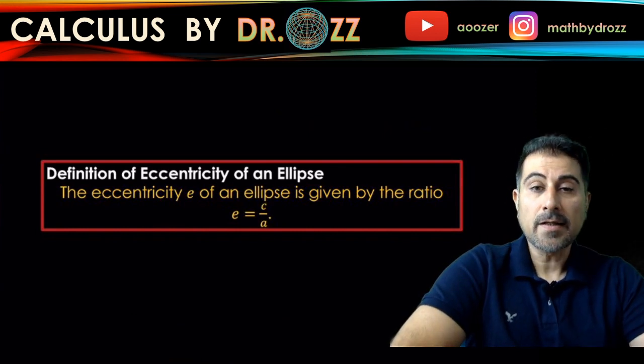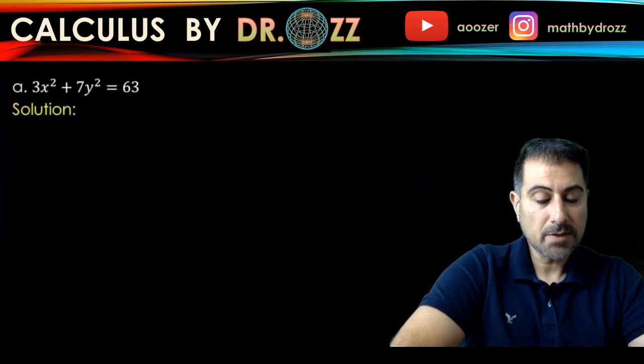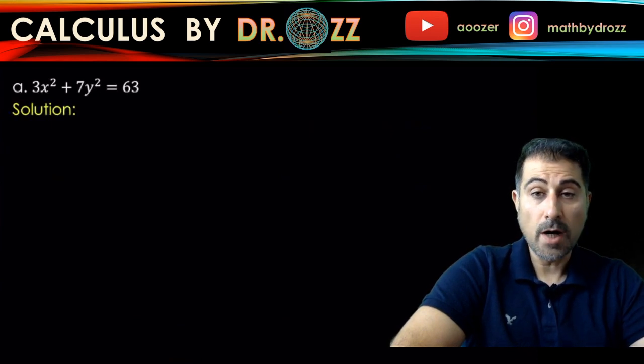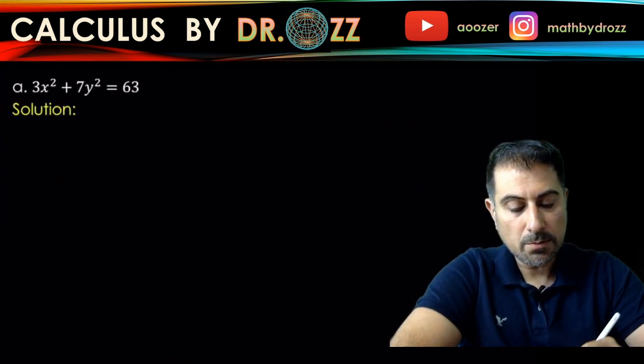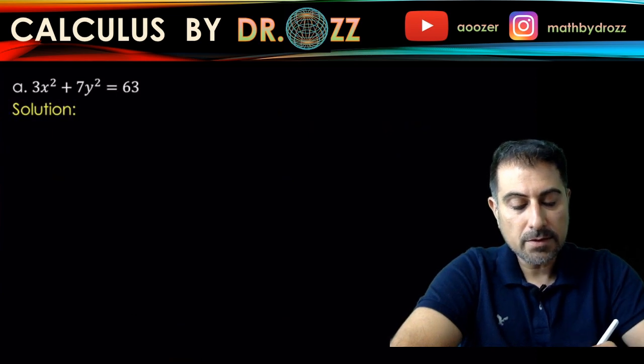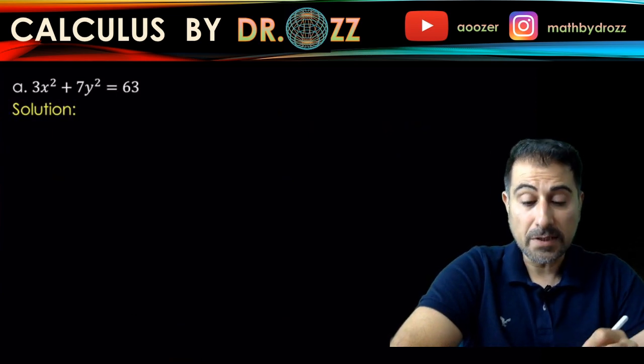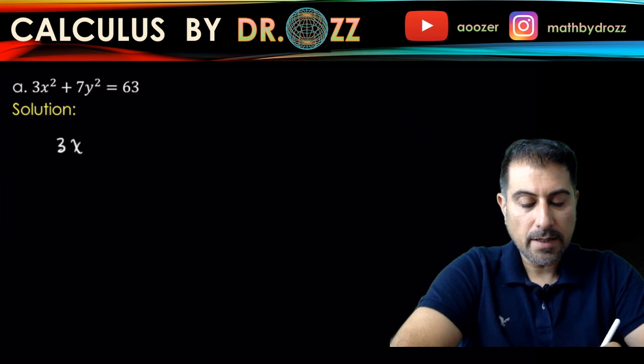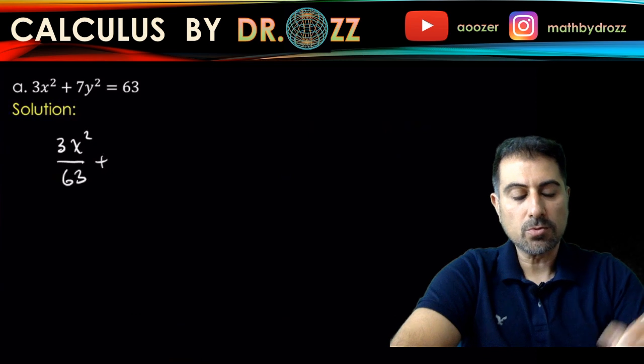Well, one thing is that the equation of the ellipse had the right hand side always one. So we should start probably dividing both sides of the equation by 63. Okay, so I have 3X squared over 63 plus 7Y squared over 63 to be equal to 1.